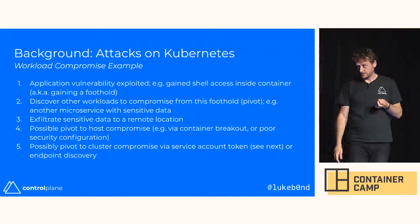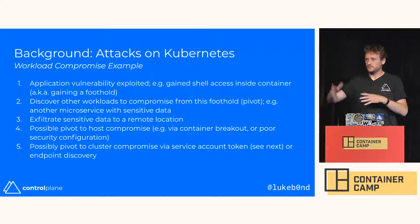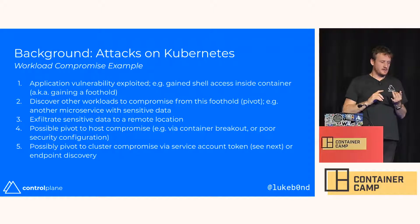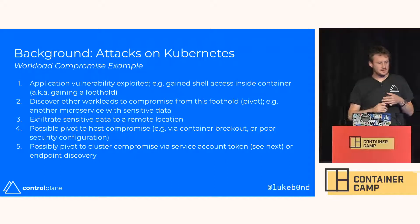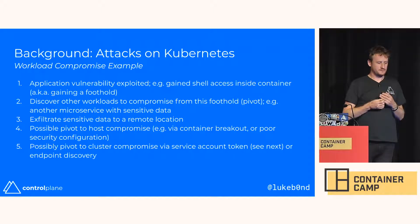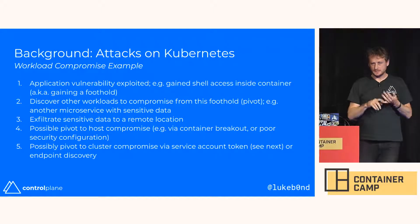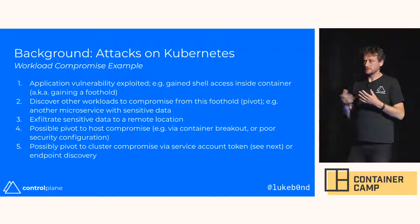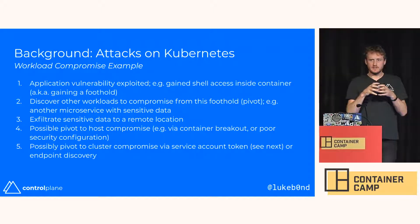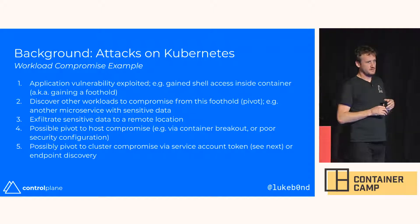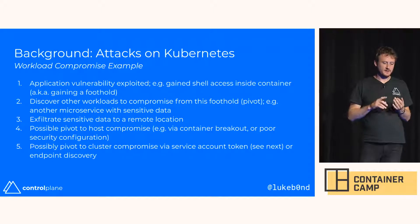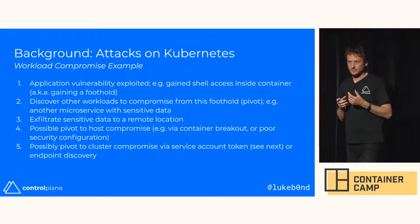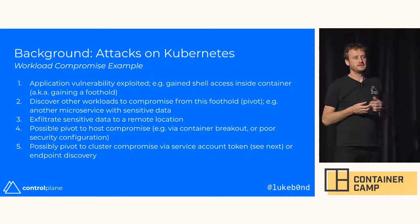How would an attack proceed in the case of a workload compromise? You've got an application running in a container, in a pod, on a host, in a cluster. That workload gets compromised via an application vulnerability — for example, the Equifax breach, which exploited a Struts vulnerability. Attackers want to gain shell access inside a container. At that point, they're in a mount namespace and can only see what's in that namespace. From there, they'll discover other workloads they can talk to — maybe a database with sensitive data they want to query.